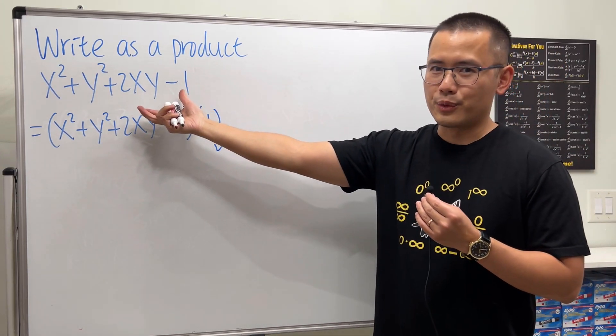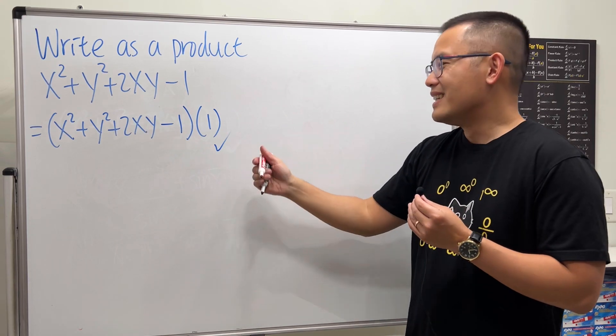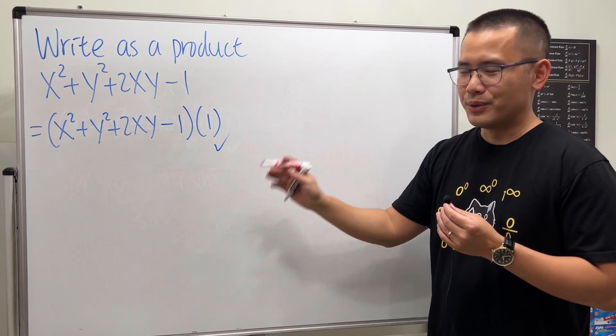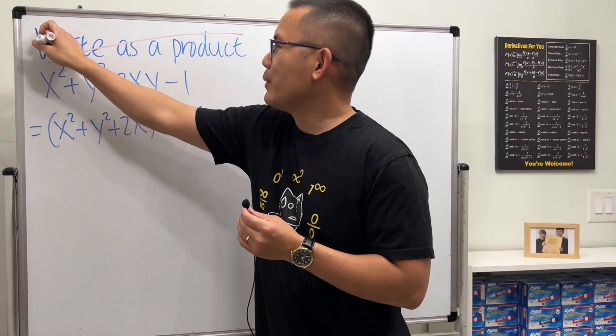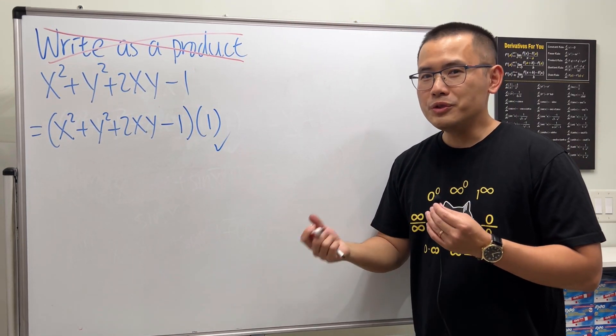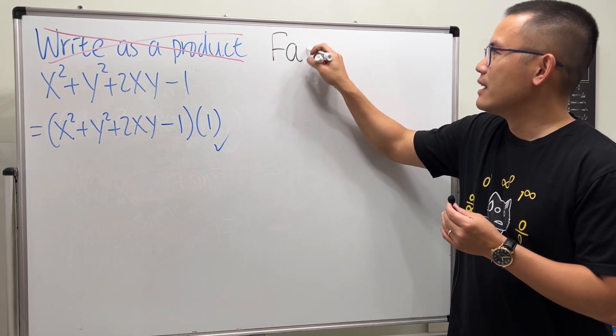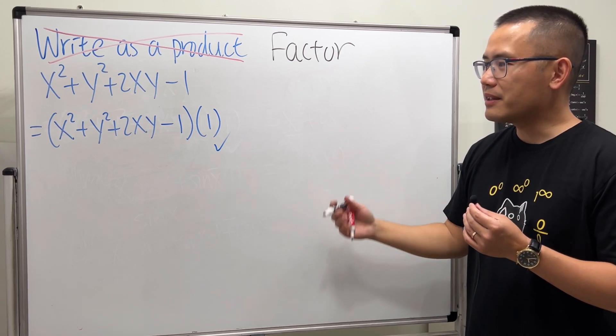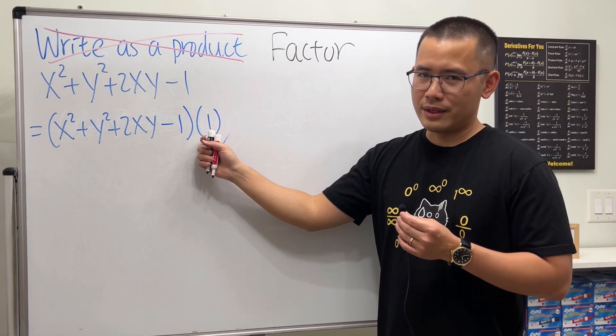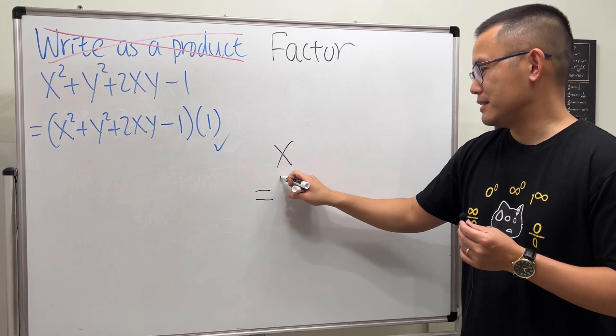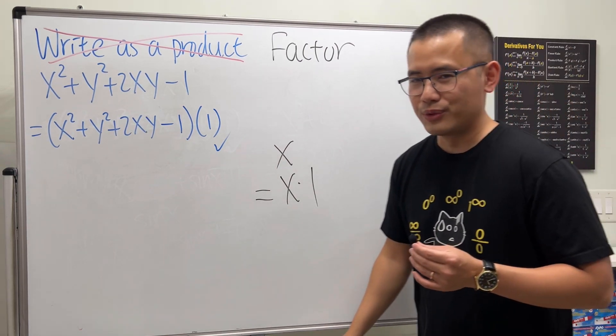But no, this is not what the question was intending for you to do. I will say it's just like a bad direction for the question. What we should be talking about here is factor the following polynomial. And when we are talking about factoring, you don't want to use one, otherwise everything is factorable. You can even factor x as x times one, so don't do that.